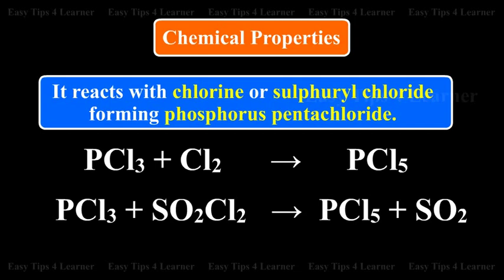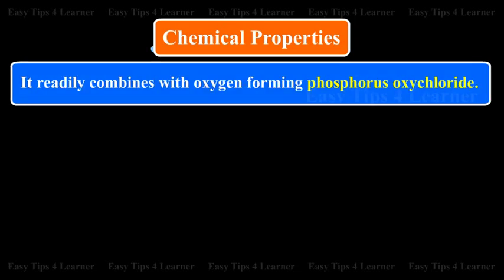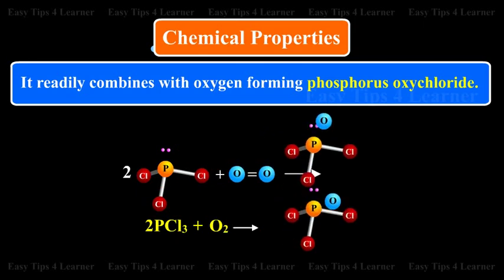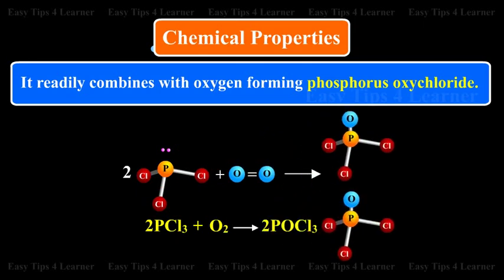It readily combines with oxygen forming phosphorus oxychloride. 2PCL3 plus O2 gives 2POCl3.